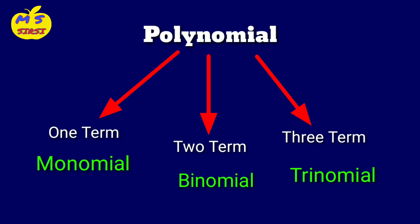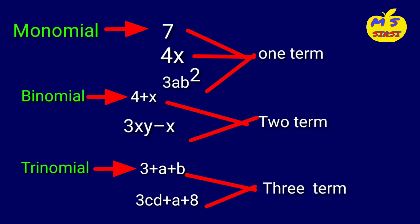One means mono, two means bi, three means tri. Please do not skip this video. This is the main part of polynomial.